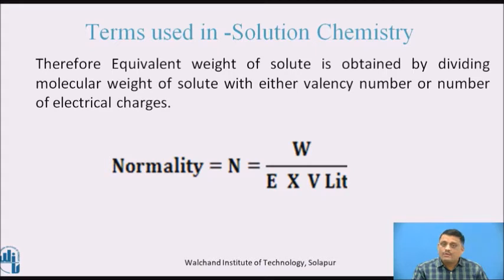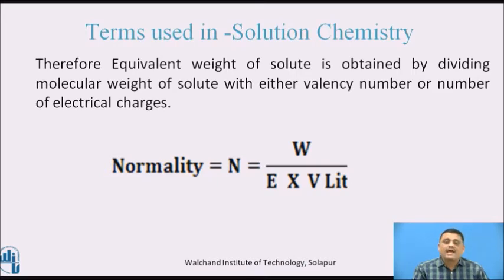Equivalent weight of any solute is obtained by dividing the molecular weight of that solute by either the valency number or the number of electrical charges. The valency number is applicable in the case of salts — for example, NaCl: Na has one positive charge and Cl has one negative charge. If the material is an acid, we divide by its number of H⁺ ions. So finally, N = W / (E × V), where W is weight of solute, E is equivalent weight of that solute, and V is volume of solution in litre.